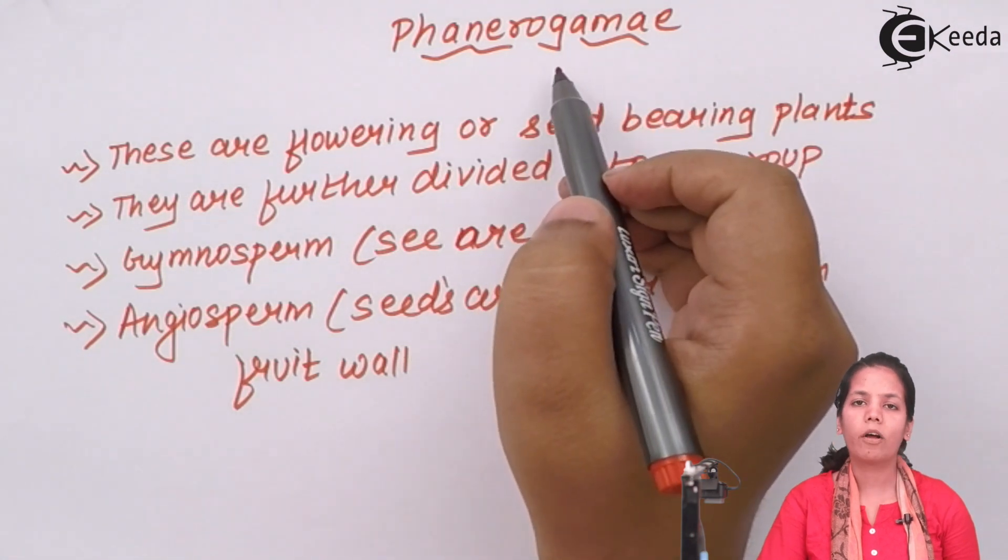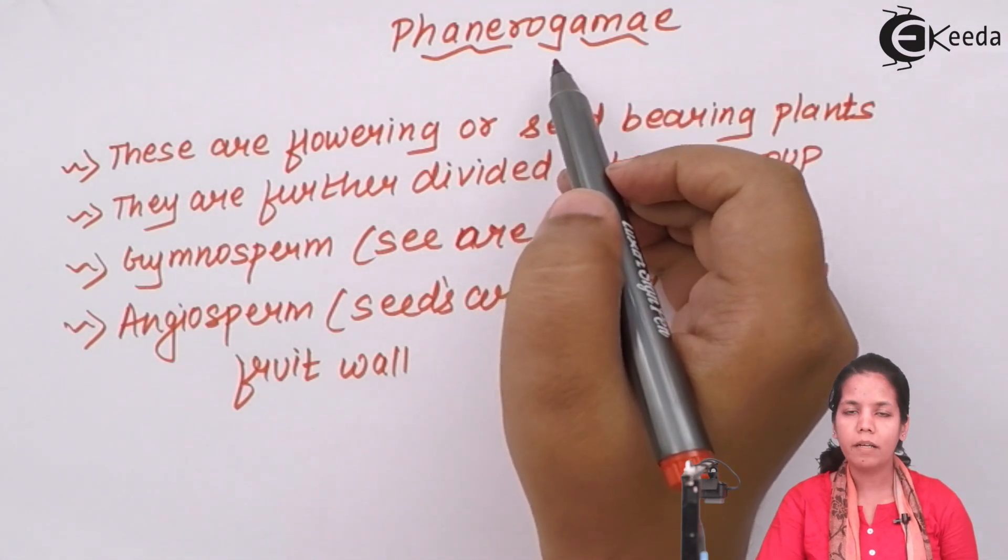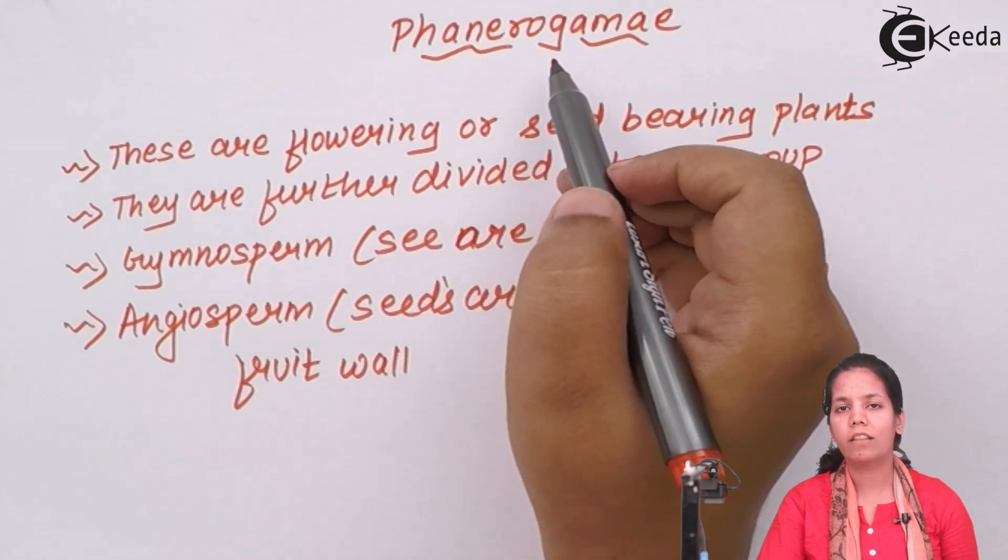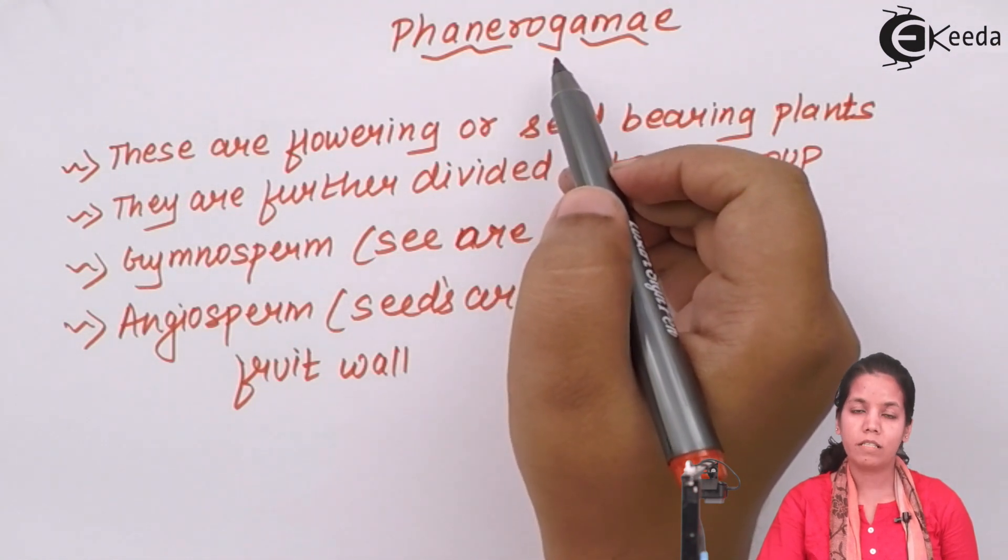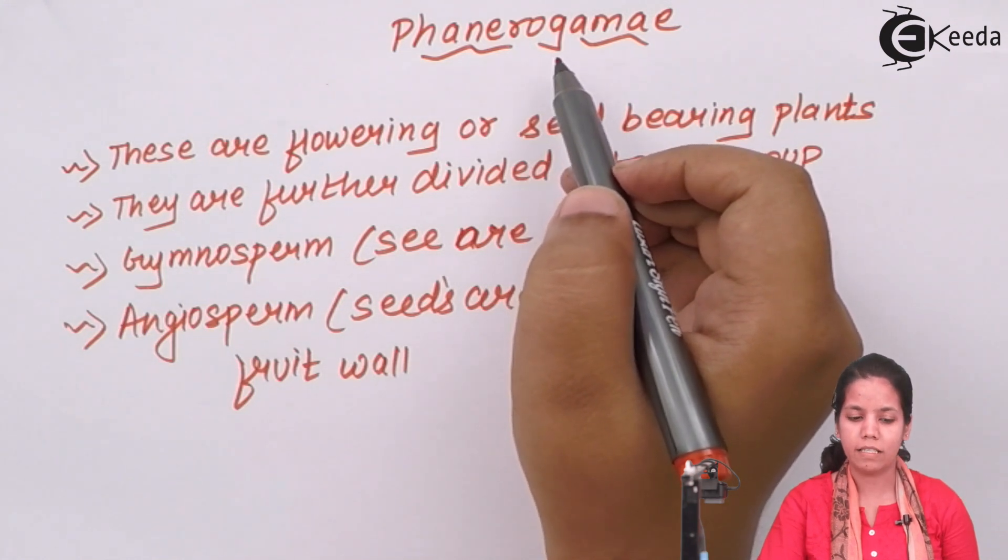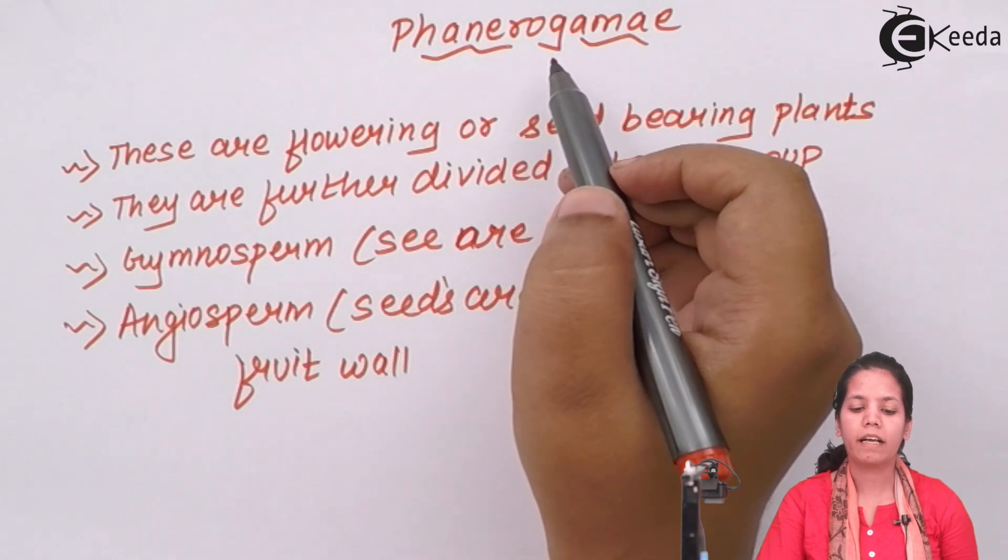Phanerograms are a part of Kingdom Plantae. Kingdom Plantae is divided into two different categories. One was Cryptogams and another was Phanerograms. Phanerograms were seed bearing plants, whereas Cryptogams were plants that do not bear the seeds. Thallophyta, Bryophyta, Pteridophyta belong to Cryptogram family.